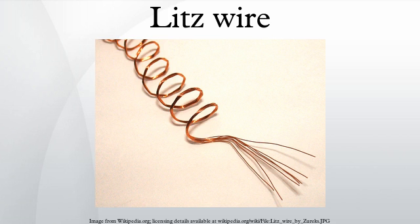Litz wire is a type of cable used in electronics to carry alternating current. The wire is designed to reduce the skin effect and proximity effect losses in conductors used at frequencies up to about 1 MHz. It consists of many thin wire strands, individually insulated and twisted or woven together, following one of several carefully prescribed patterns often involving several levels. This winding pattern equalizes the proportion of the overall length over which each strand is at the outside of the conductor. The term Litz wire originates from Litzendraut, German for braided stranded wire or woven wire.